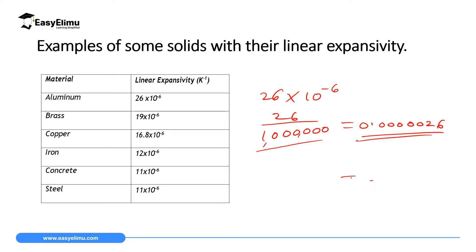These expansivity values are very important especially in construction. When using steel and concrete together, you must use materials with almost the same linear expansivity so that the structure does not crack. Steel and concrete have the same linear expansivity — 11 × 10⁻⁶ — so they expand and contract uniformly as temperature changes.